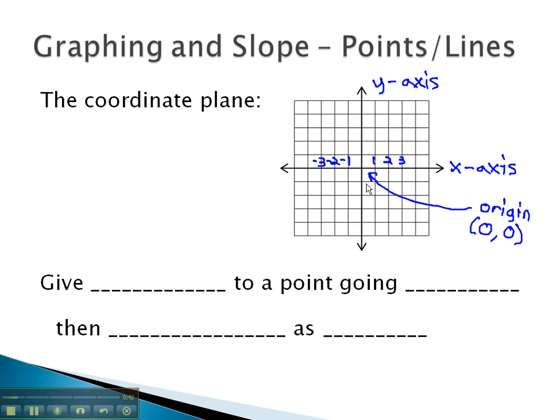Similarly, on the y-number line, we have positive numbers going up and negative numbers going down. We give directions to points on this coordinate plane using these two number lines.